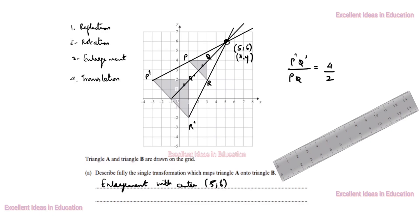So, this distance is 4. This distance is 2. 4 divided by 2: 1 2s are 2, 2 2s are 4. So, scale factor is 2.